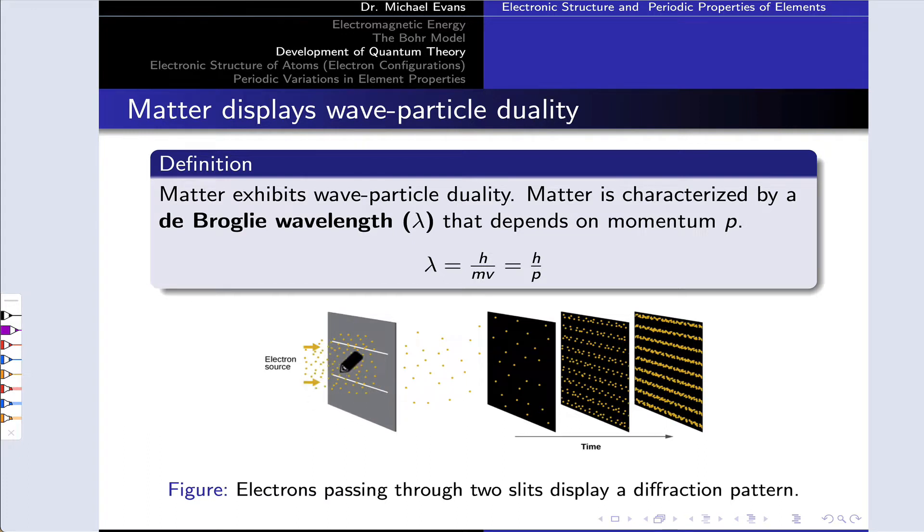If the electrons were purely particles, then we would expect two lines of electrons where the two slits are located, or perhaps random dispersion of the electrons on our detector.